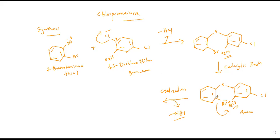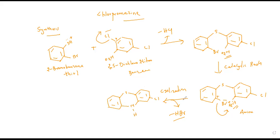Since there is a positive charge on the carbon atom, nitrogen donates its extra lone pair of electrons towards the positively charged carbon, forming a new bond between nitrogen and the carbon atom of the aromatic ring, producing a proper ring structure. The resulting structure has the aromatic ring system with sulfur fused to another aromatic ring, a chlorine atom, nitrogen, and one hydrogen — this compound is called 2-chlorophenothiazine.